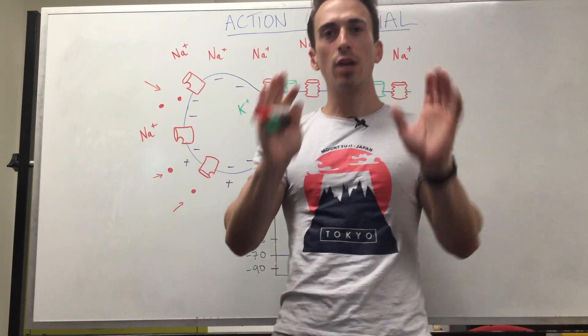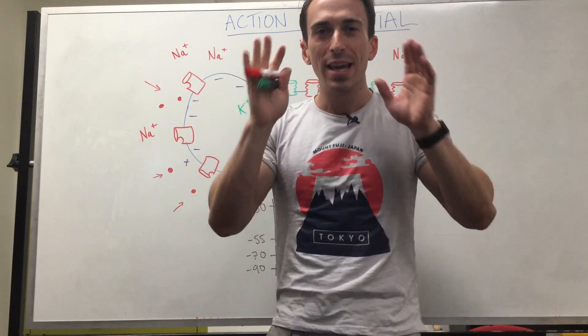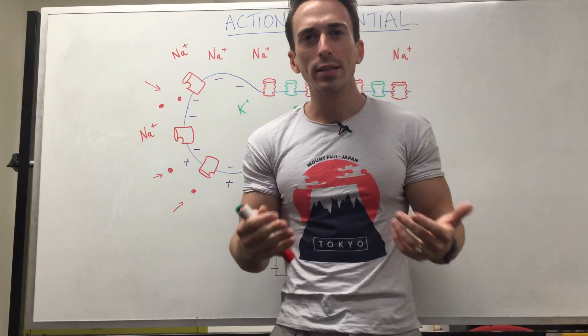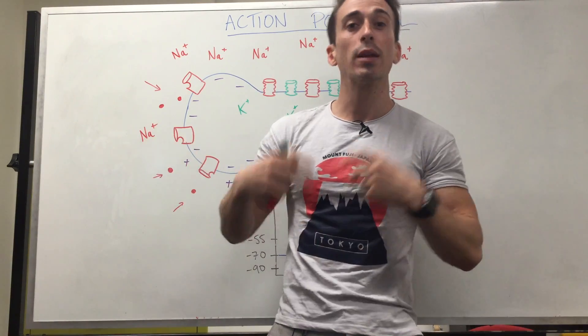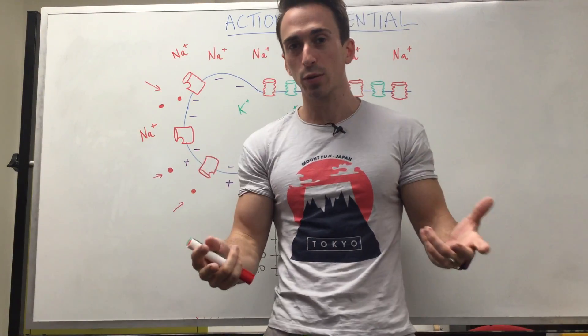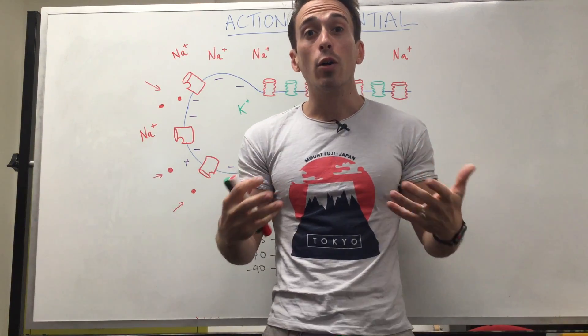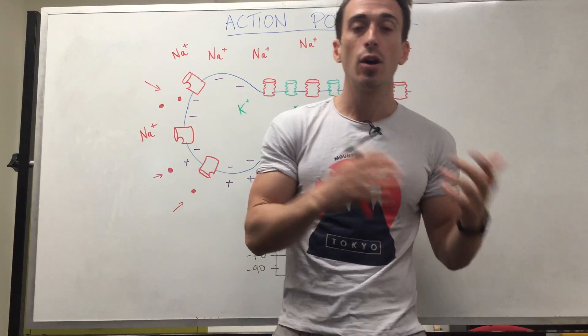Simply put, any time one of your neurons or nerves sends a signal, it does it via an action potential. You always think of your nerves sending electrical signals, but in actual fact they send electrical chemical signals. What are these electrical chemical signals?